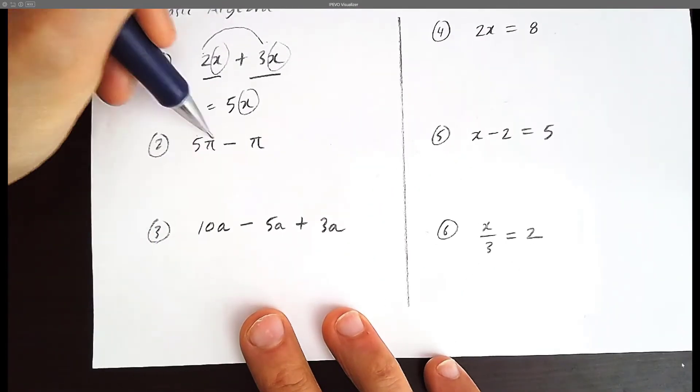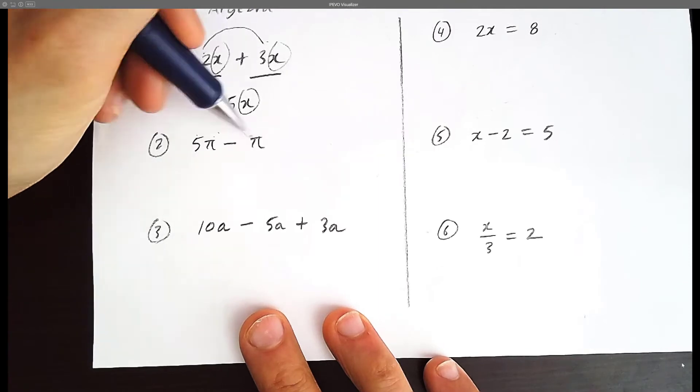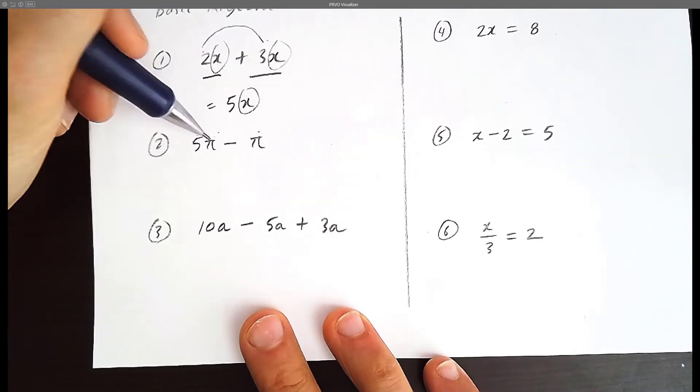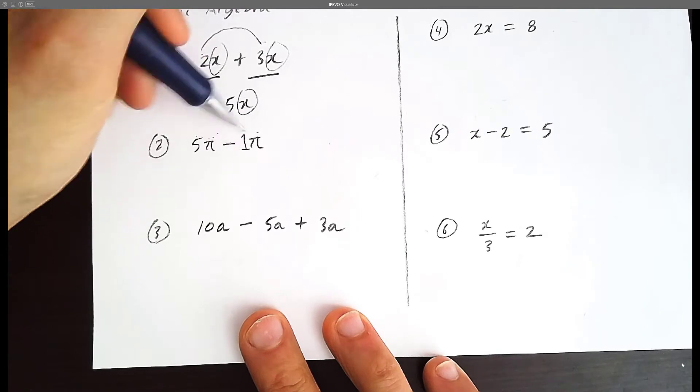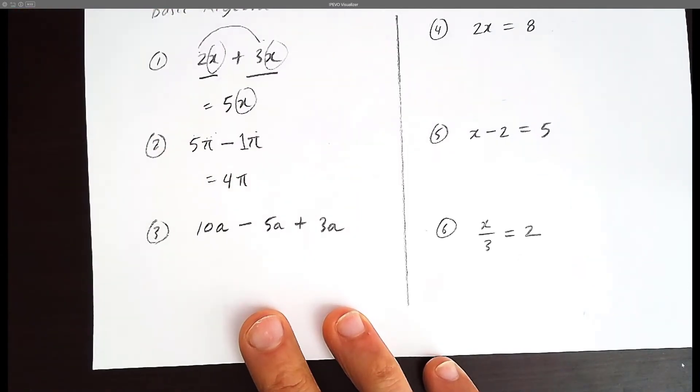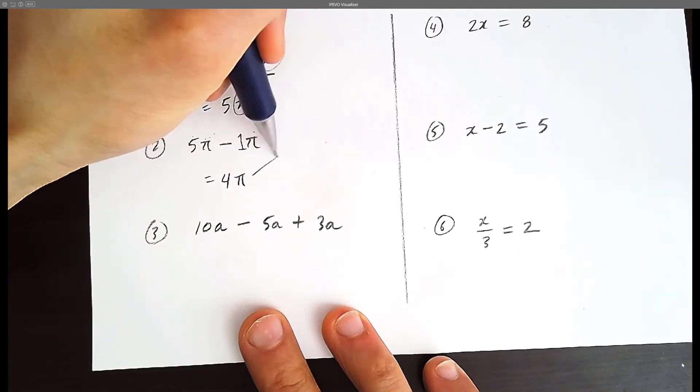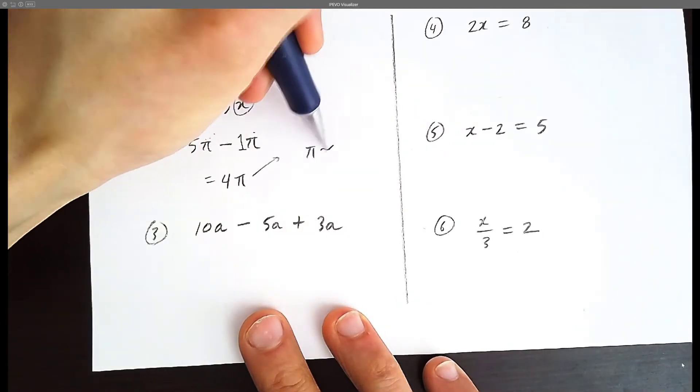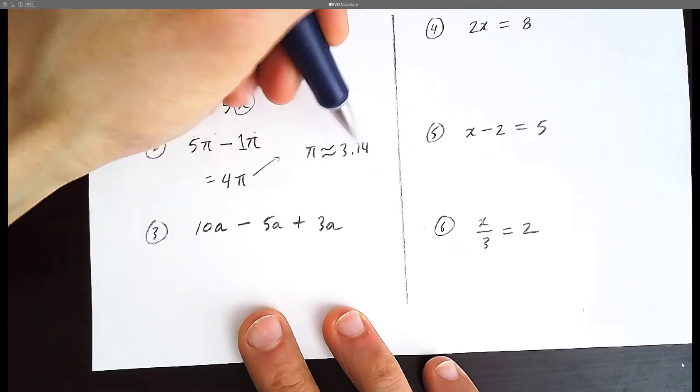Imagine you're eating five pies. What's 5π minus π? Five π take away one π—there's a hidden one here—is going to be 4π, and π is delicious. We learn in math that π is a constant. π is approximately 3.14. It's a very special constant.